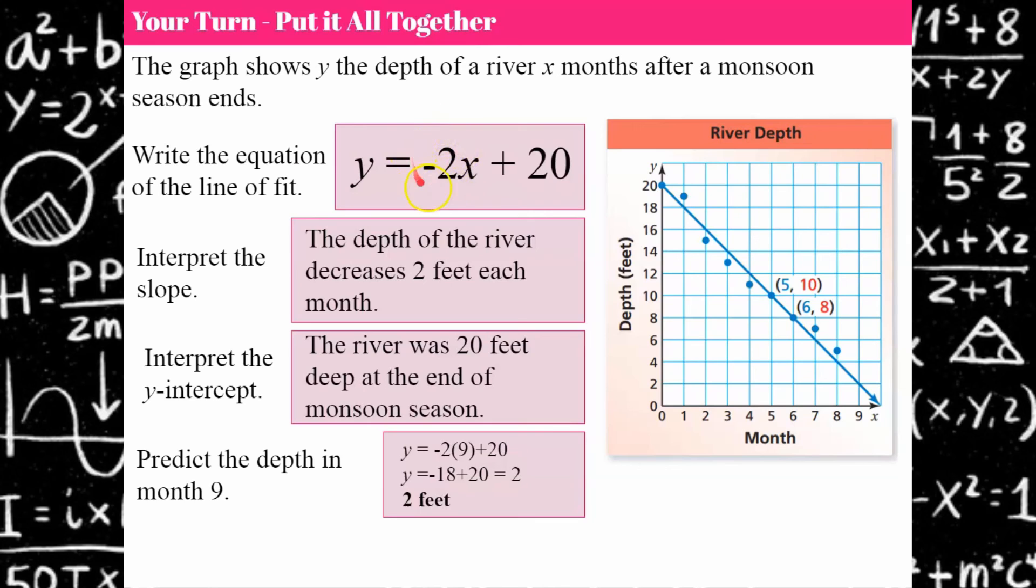To interpret this slope of negative 2, remember this is a rate, it's a ratio of feet over months. So what am I talking about? My river depth.